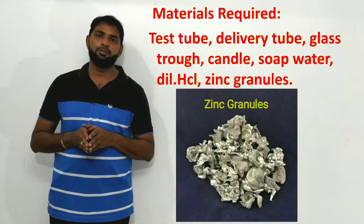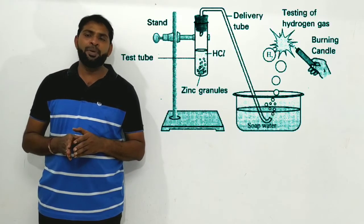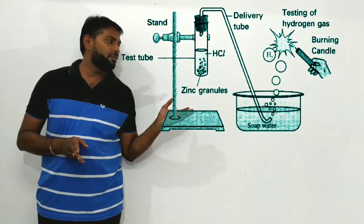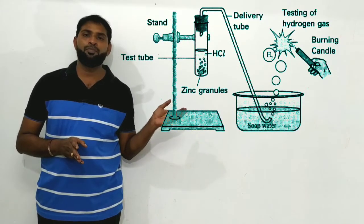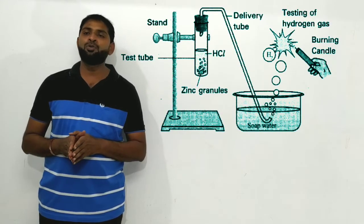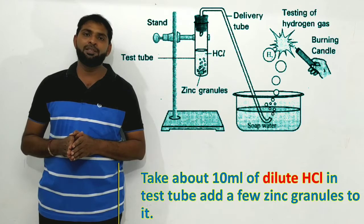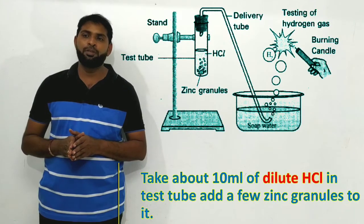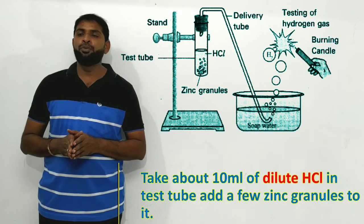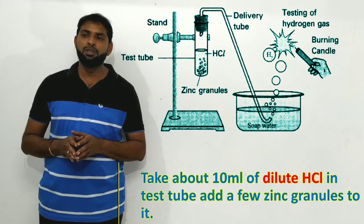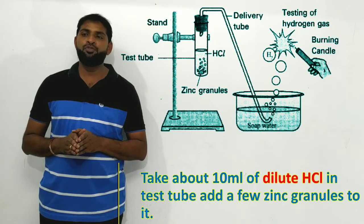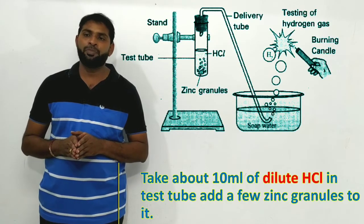Set the apparatus as shown in the figure. Take about 10 ml of dilute HCl in a test tube and add a few zinc granules to it.